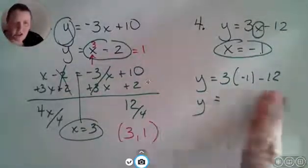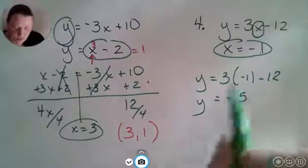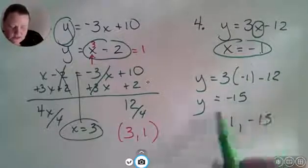When I do my computation here, I'm going to end up with negative 15, and so I'm ready to write the answer: x is negative 1, y is negative 15. Final solution.